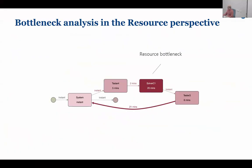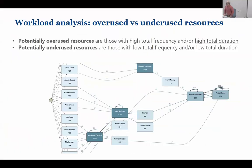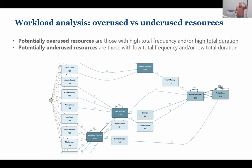This brings me to workload analysis. In addition to identifying bottlenecks, it is very useful to identify overused and underused resources — which resources have too much work and which have too little. When you switch to the process map view in the resource perspective, you immediately see color-coded which resources are involved in many cases and which in few. The darker, the more involved. I can see some resources here that are quite overloaded.